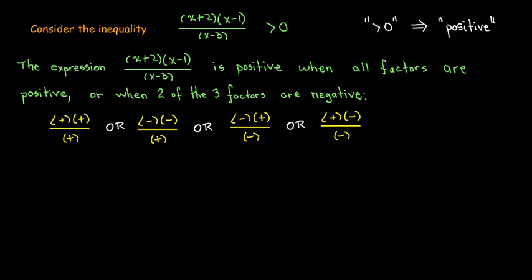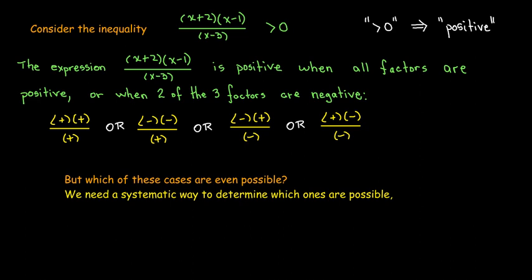I could have a positive times a positive divided by a positive. The two top factors could be negative and the bottom one positive. Or, I could have one factor negative on top and the bottom be negative. You could actually find a solution by going through all four cases, but that's a lot of work, and some of these cases might not even be possible. We need a systematic way to determine which intervals are the solution set.